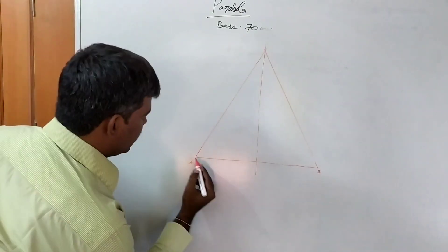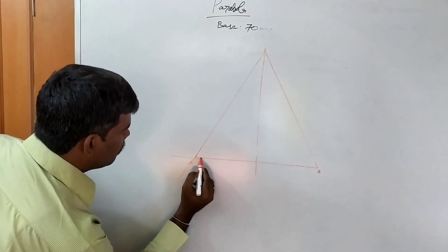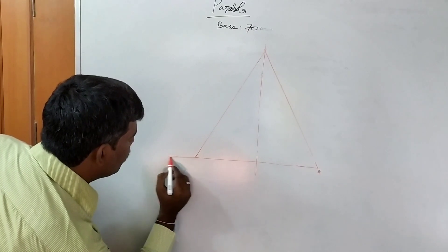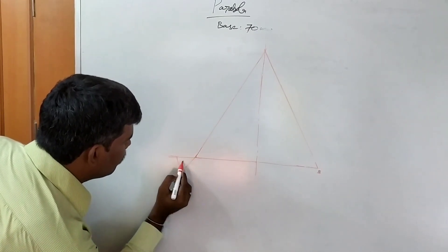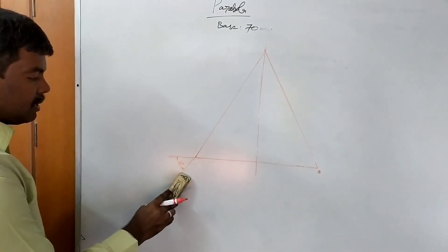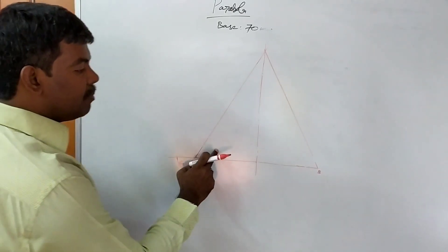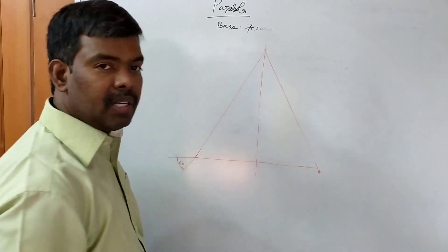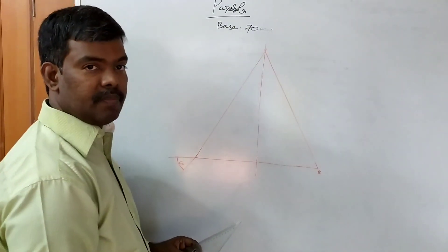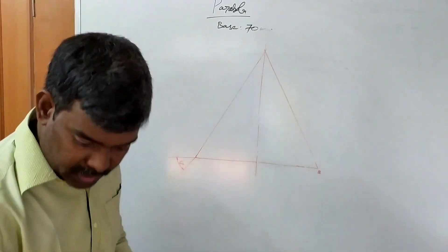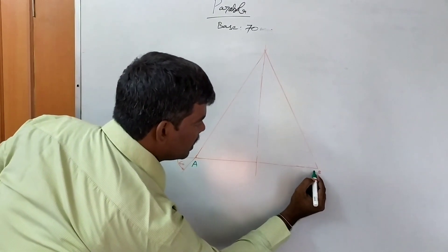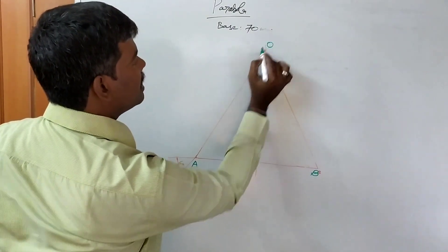The angle is 60 degrees at both ends. Here 60 degrees and here also 60 degrees, forming an equal triangle. After completion of this, we label A, B, and O. The OA distance is 100% equal to the OB distance, and the base is 70 mm.